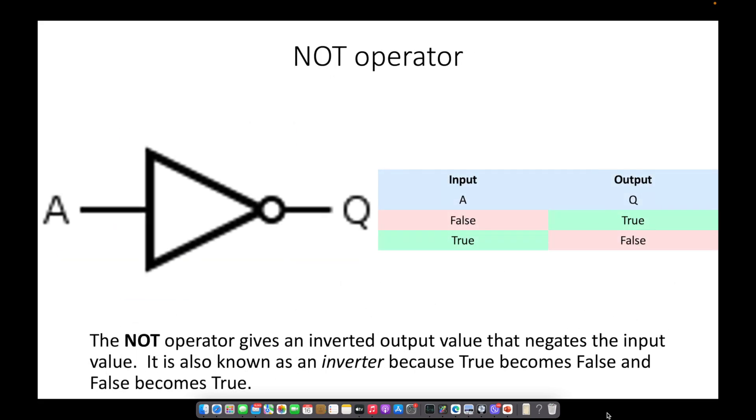The NOT operator gives an inverted output value that negates the input. It is also known as an inverter because TRUE becomes FALSE and FALSE becomes TRUE.